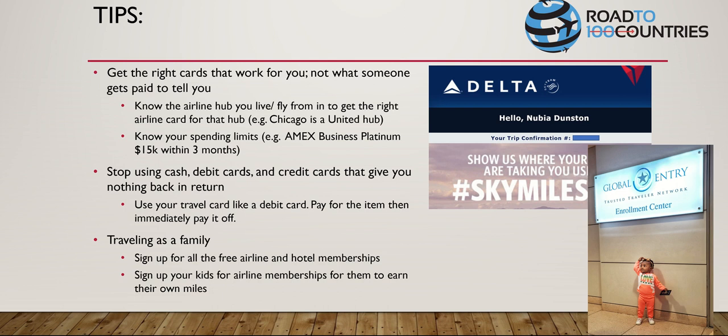For family travel: sign up for all free airline and hotel memberships - all of them. Also sign up your kids. A lot of people don't know kids can accumulate their own points and miles. If you can't sign them up online due to age restrictions, just call the airline and have them create an account. Nubia has her own Delta SkyMiles number, her own global entry, her own passport, and TSA pre-check. Your kids can have everything you have.